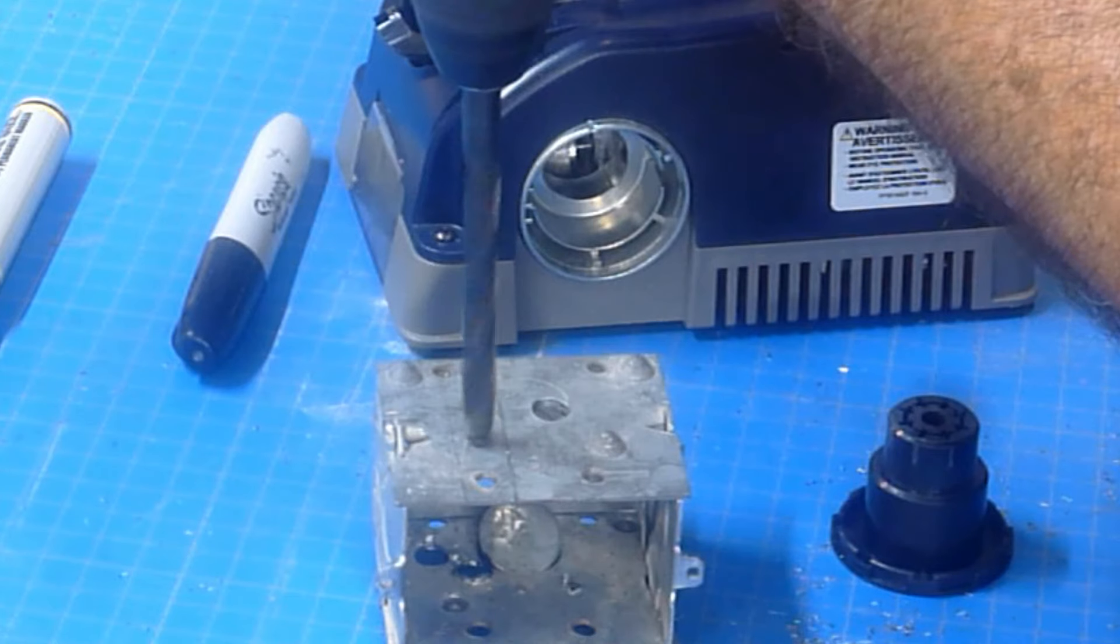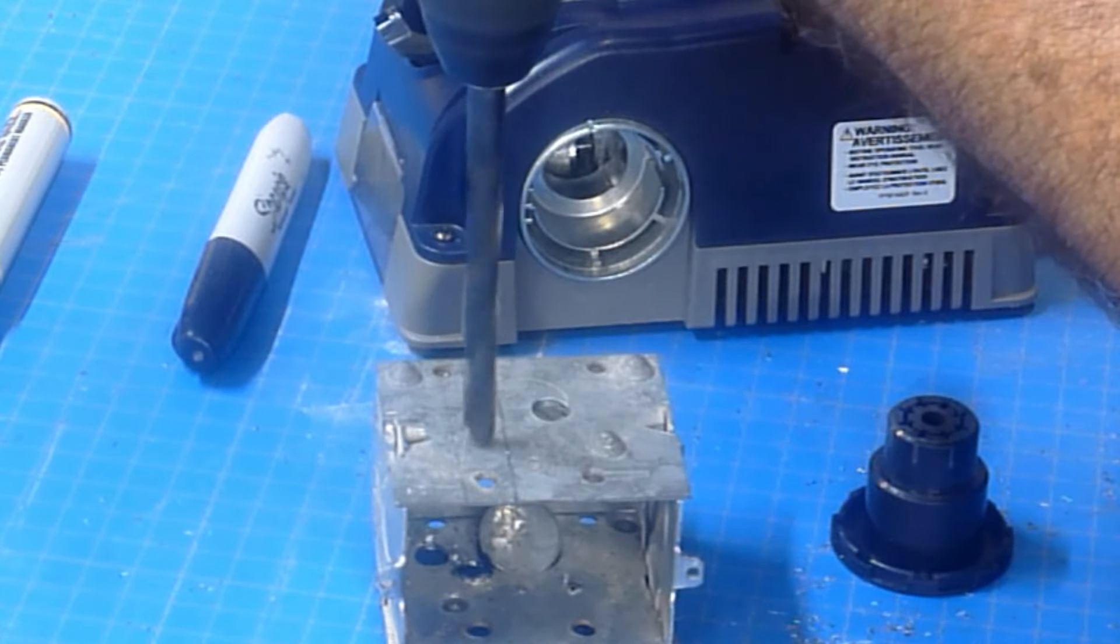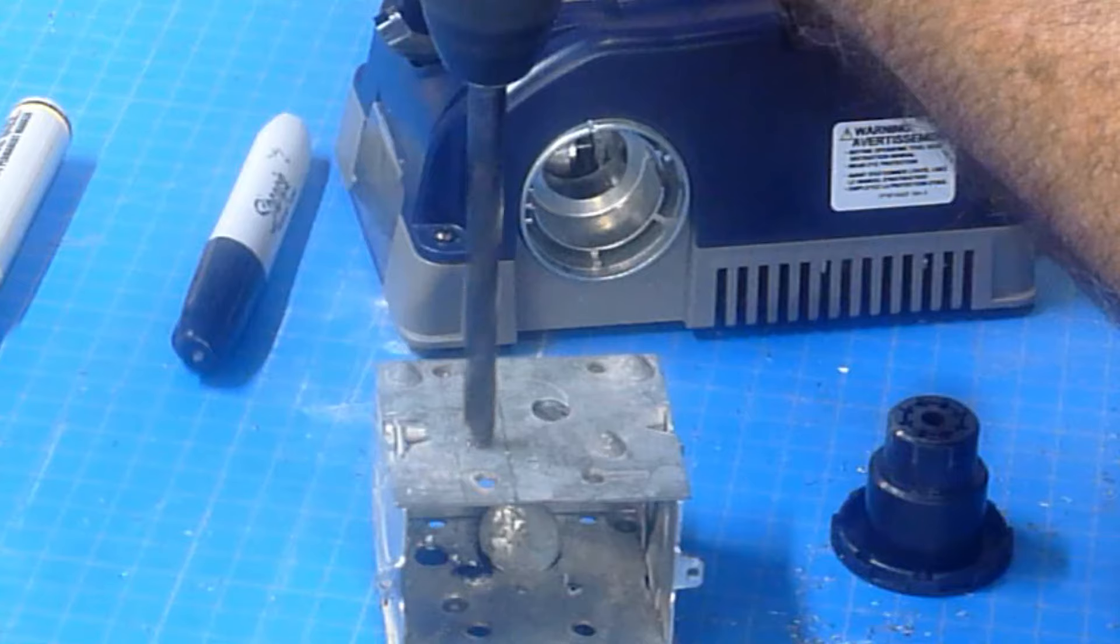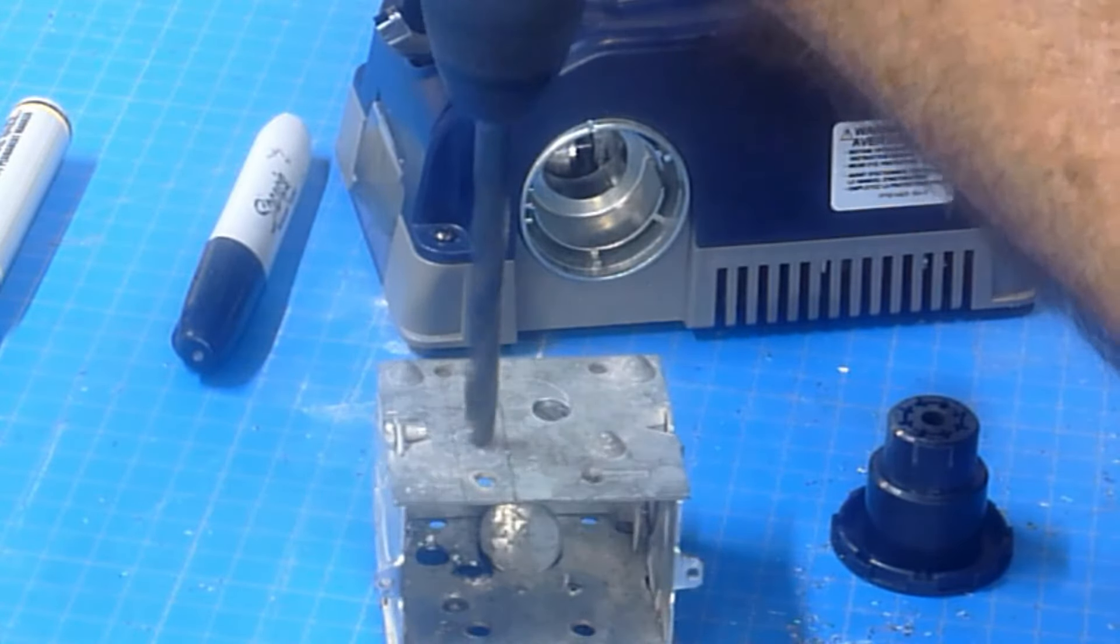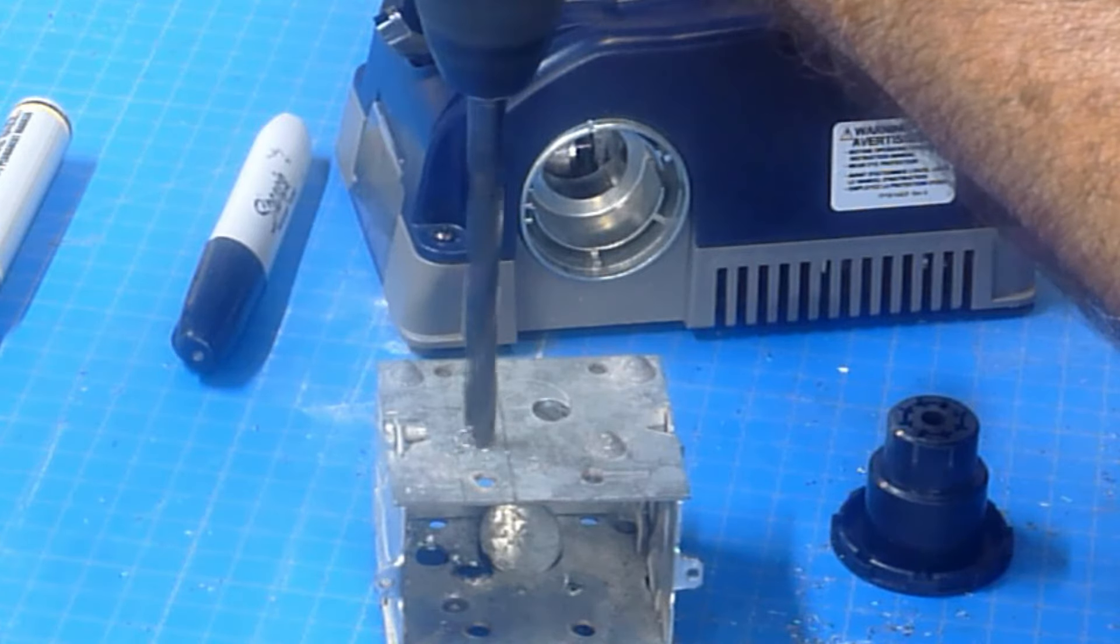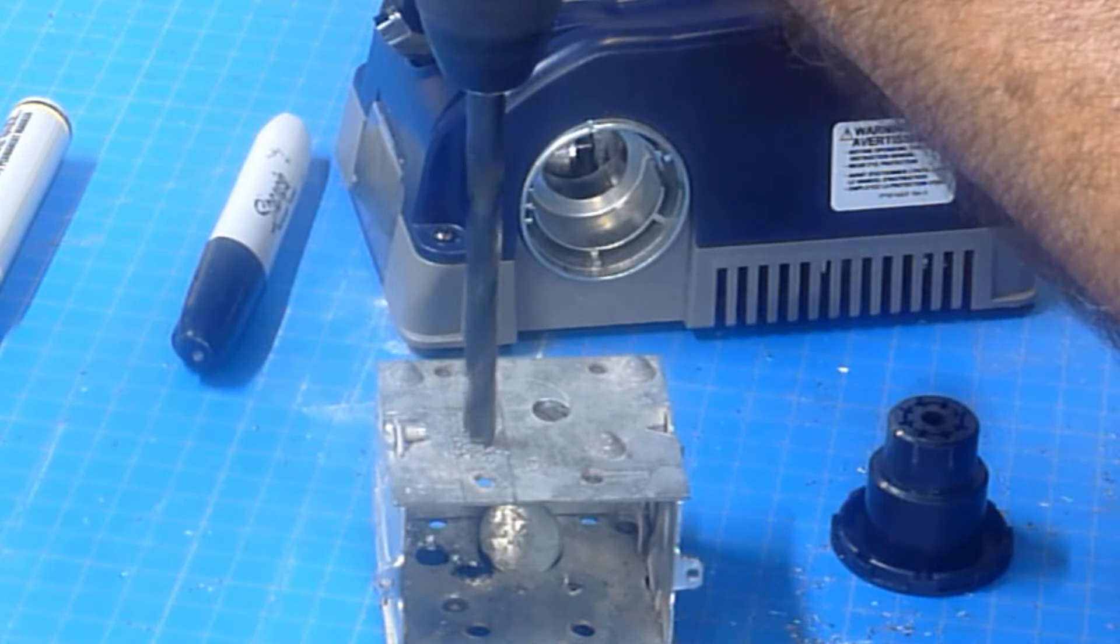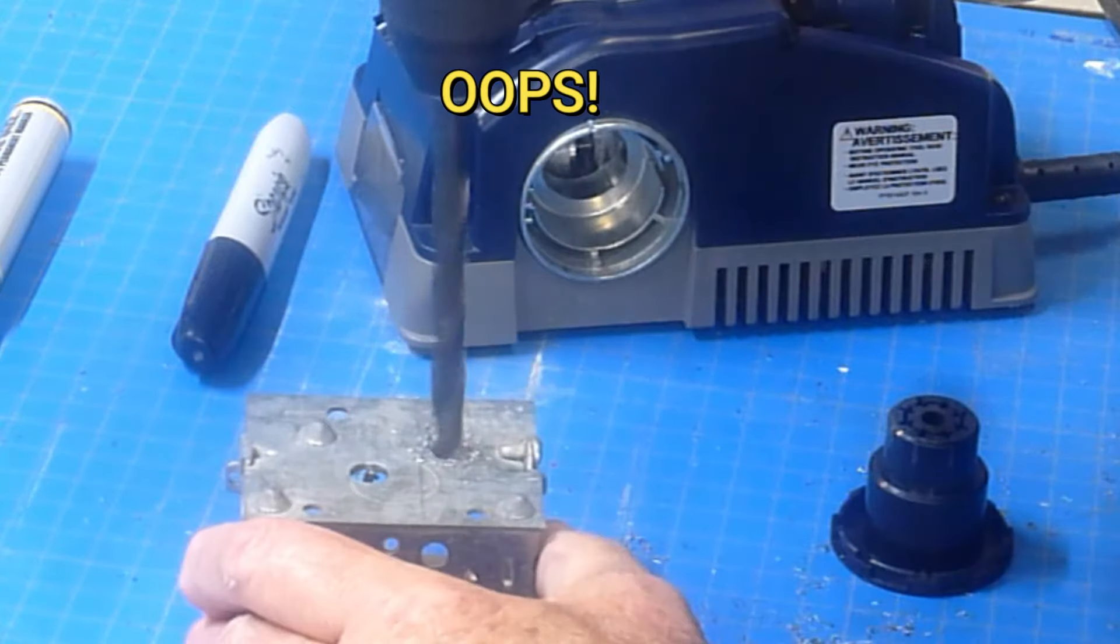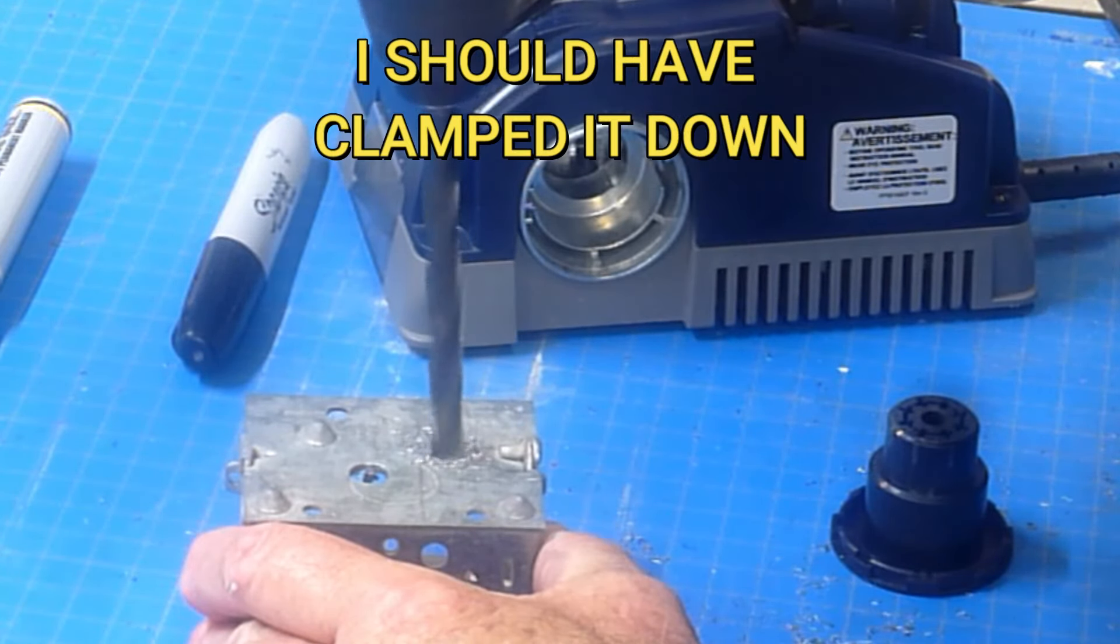So now we can try it out without the dimple and you can see the bit doesn't wander and it should cut faster. This would have been faster in the drill press. But as you can see, I'm getting plenty of metal shavings here. So it is cutting well. Also, if you don't like your results, there's some diagrams on pages 18 to 20 of your manual that will show you what your split ends should look like.